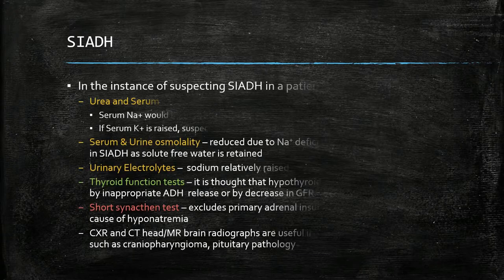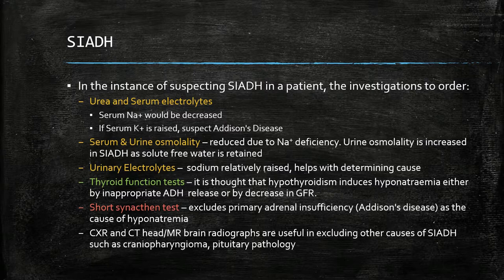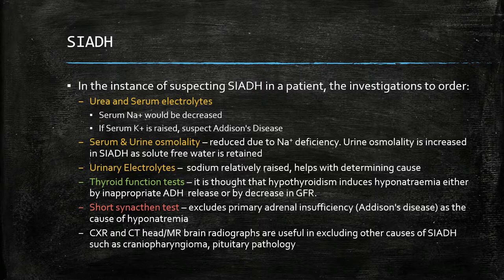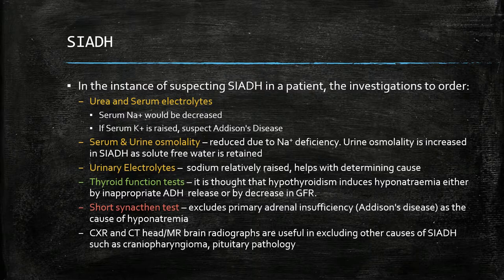Given that SIADH can have sinister underlying causes, it is imperative to investigate fully. Urea and electrolytes would show a decreased sodium level; combined with a raised potassium in type 4 renal tubular acidosis, this would point towards Addison's disease. Serum osmolality is reduced, while urine osmolality is increased in SIADH as solute-free water is reabsorbed, and urinary sodium would be relatively raised. Thyroid function tests can help rule out hypothyroidism, and a short synacthen test can exclude Addison's. Chest X-ray, CT head, and MRI brain are useful in excluding other causes such as craniopharyngioma and other pituitary pathology.